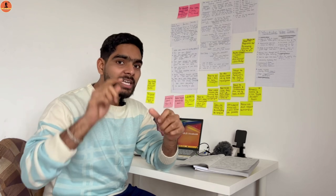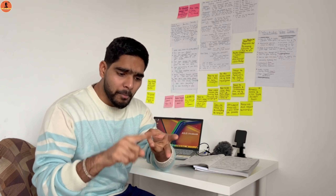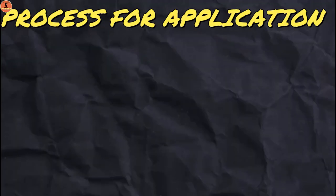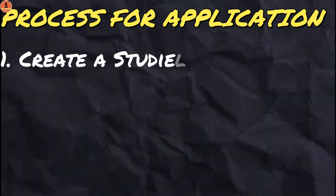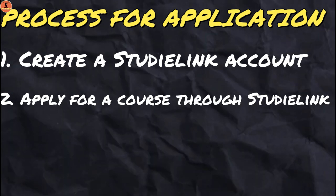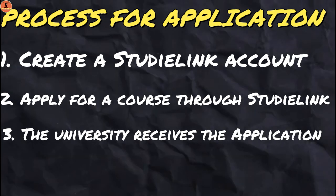In this video I'm gonna show you from where you can start your application process for Netherlands master studies. Many people don't know where to begin, so this video is going to be very helpful. Before starting, check that you are eligible for the course you choose by going to the official website of the university. The first and foremost thing we need to do is create an account in Studielink.